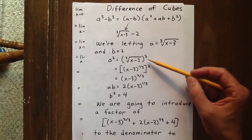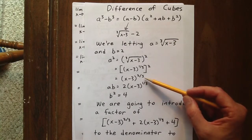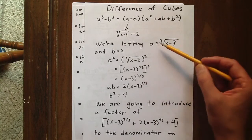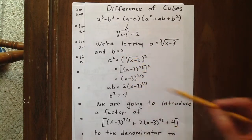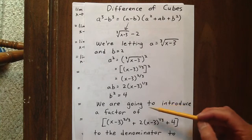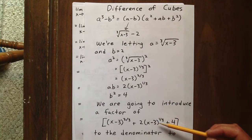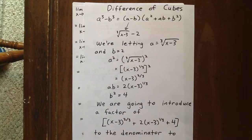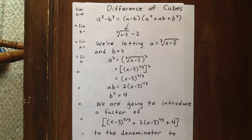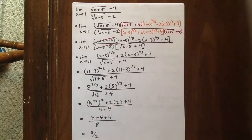So that would mean that a squared is x minus 3 to the 2 thirds, ab is 2 times x minus 3 to the 1 third, and b squared is 4. So we're going to introduce a factor of x minus 3 to the 2 thirds plus 2 times x minus 3 to the 1 third plus 4 to the denominator and to the numerator, to be fair.